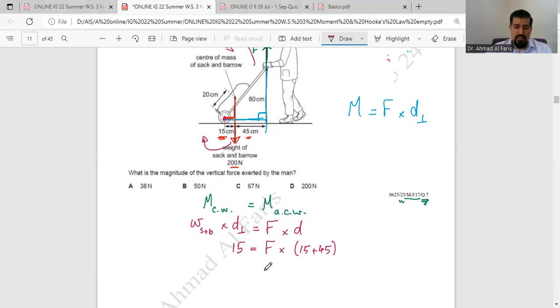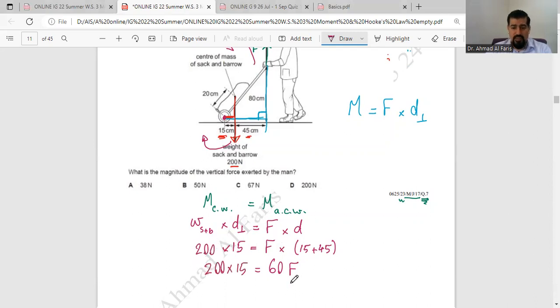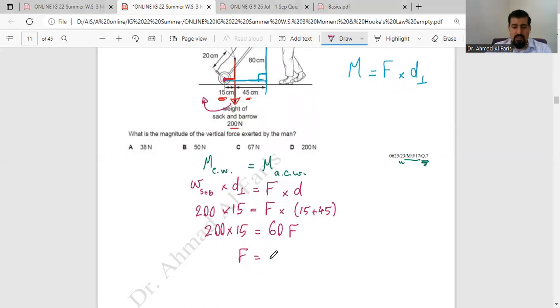So force multiplied by 60, 60F, equals 15 multiplied by the weight of the sack and the barrow, which is 200 newton. So 200 newton multiplied by 15 divided by 60, and the answer will be 50 newton. So the answer is B. Assalamualaikum.